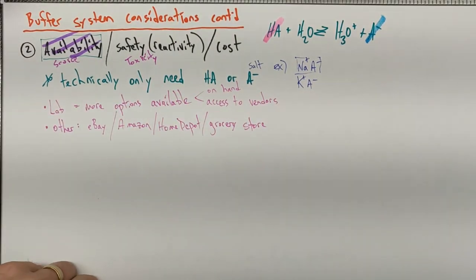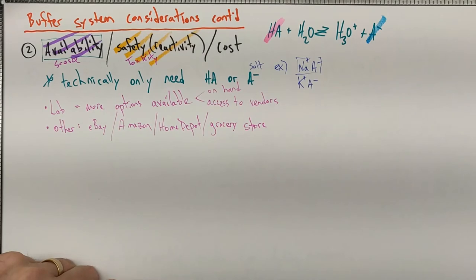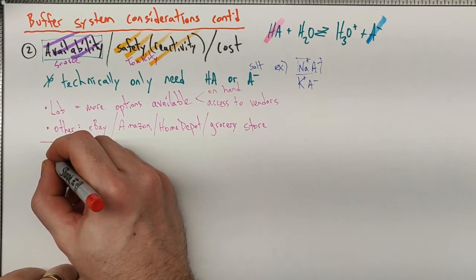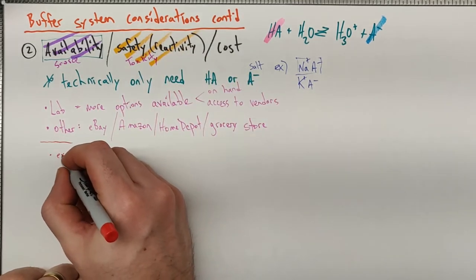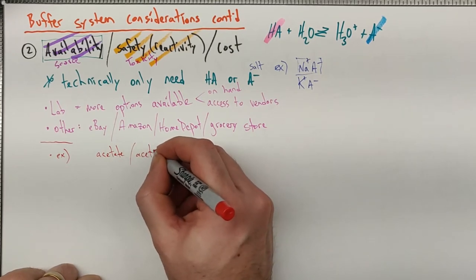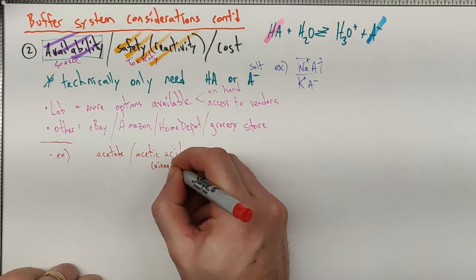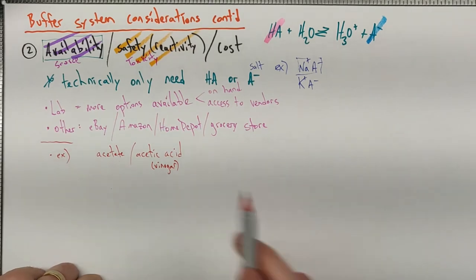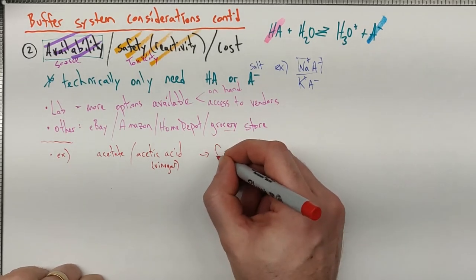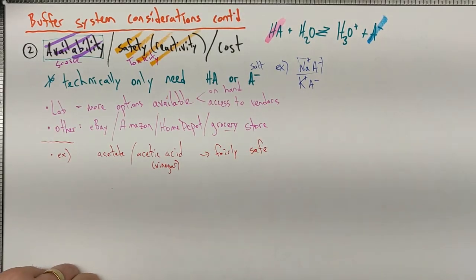Making sure you have access to these, the next thing is should you have access, and that's kind of related to safety and reactivity or toxicity. Some common examples here: some system that you could get pretty easily would be an acetate or acetic acid buffer system. That's readily available. You can buy acetic acid as vinegar. Sodium acetate, I'm sure you can get as well. That's readily available even at something like the grocery store. And that's fairly safe. That one happens to have a pKa of around 4.74.